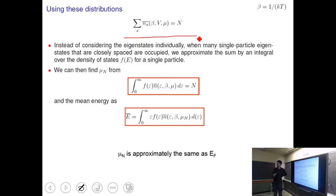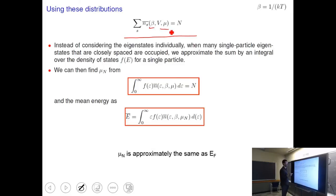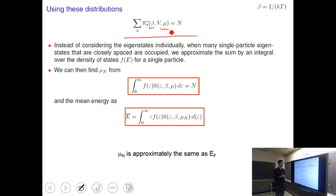The total number of particles N is obtained by summing the Fermi distribution over all energy levels, or integrating N(E) × f(ε) dε in the continuum limit. Solving this equation for μ gives the chemical potential for a given N at a given temperature. The density of states g(ε) accounts for the massive degeneracies present in solids that a single-atom picture cannot capture.